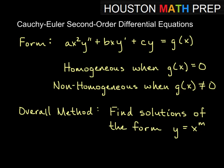You'll notice in our form the power of x matches the order of the derivative. Here we have x to the first and the first derivative, and no derivative with no x. When the right side equals zero, we call this homogeneous. When g of x is not equal to zero, we call this non-homogeneous.